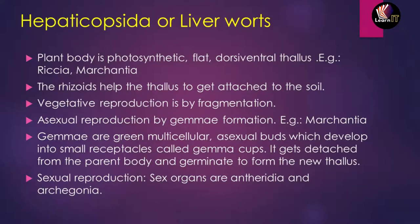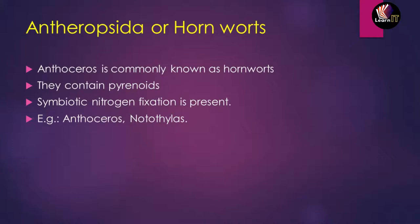Gemmae are green multicellular asexual buds which develop in small receptacles called gemma cups. They get detached from the parent body and germinate to form a new thallus. Sexual reproduction involves both antheridia (male organs) and archegonia (female organs). These are the basic features of Hepaticopsida, or liverworts.